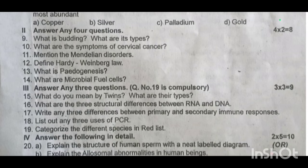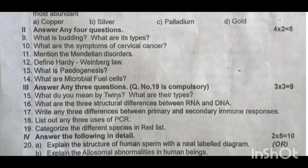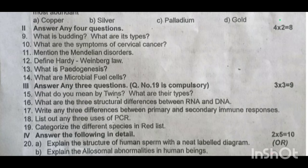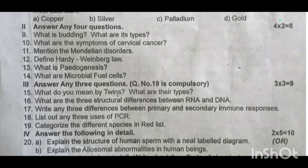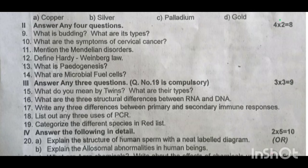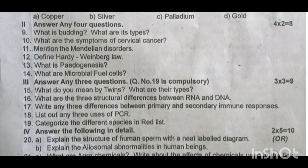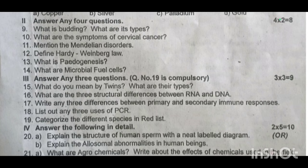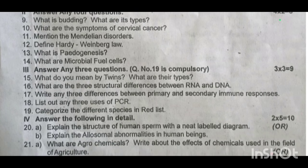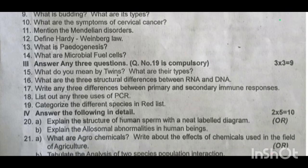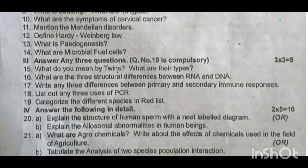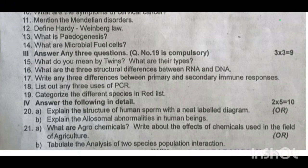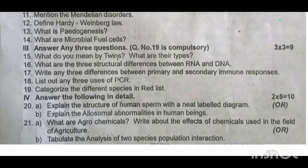Five-mark questions — most important. Question 20, explain the structure of human sperm with a neat labelled diagram. Or, explain the allosomal abnormalities in human beings. Question 21, what are agrochemicals? Write about the effects of chemicals used in the field of agriculture. Part B, analyze the two-species population interactions.